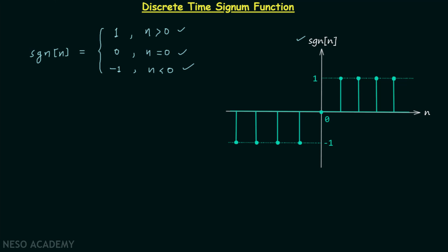Now we can divide this waveform into two portions. In the first portion, the function is equal to 0 when n is 0 and then equal to 1 for all other positive values of n. This means we are having u[n-1]. We have already seen the waveform of u[n-1] — it is obtained by a right shift time shifting operation by one integer place.